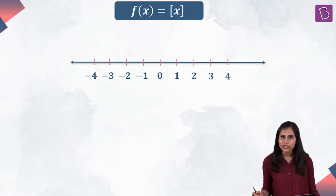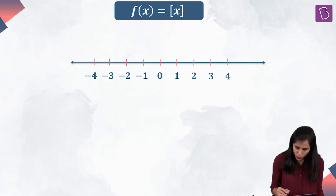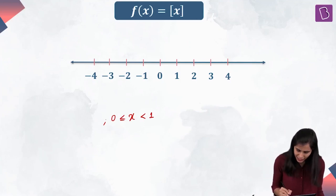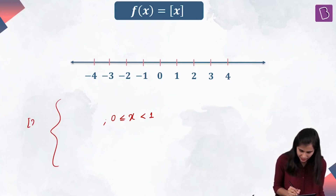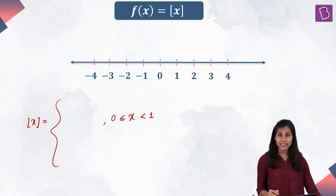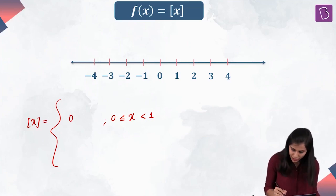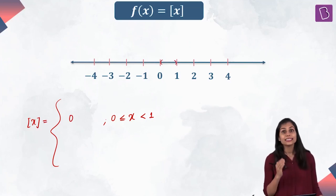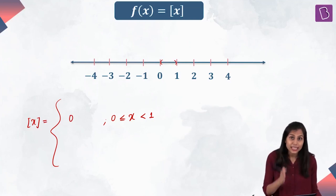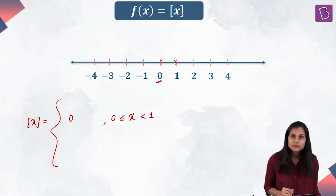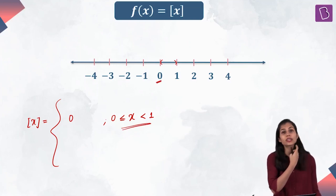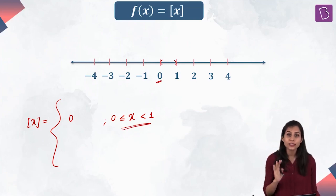Now I am in a position to generalize the behavior of bracket x, the greatest integer function. When x is greater than or equal to 0 and strictly less than 1, bracket x is 0. When x is 0, bracket x is 0. When x is strictly between 0 and 1, the integer to the immediate left of x is 0, so bracket x is again 0. That means for all x in [0, 1), bracket x is 0.